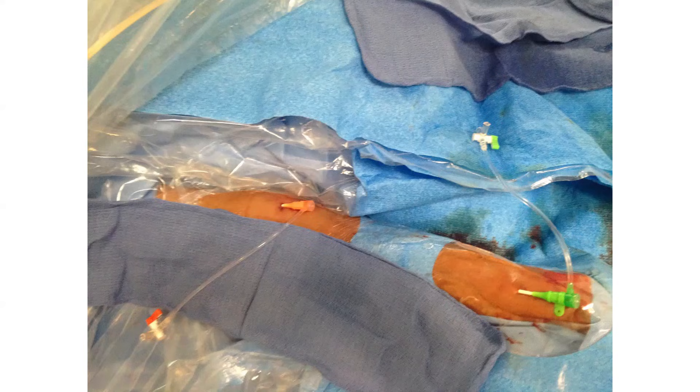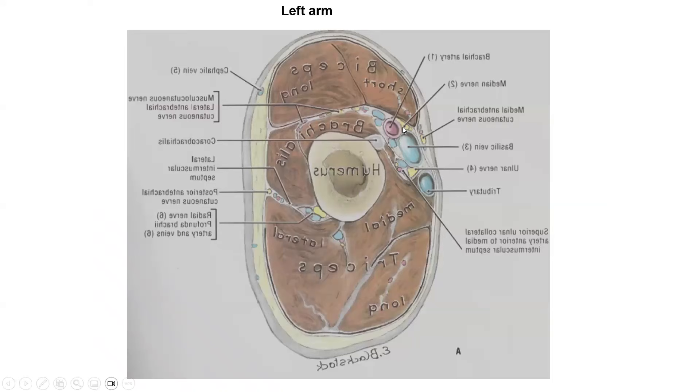So in heart failure with high right atrial pressure, brachial axis for Swan-Ganz placement is a great technique.